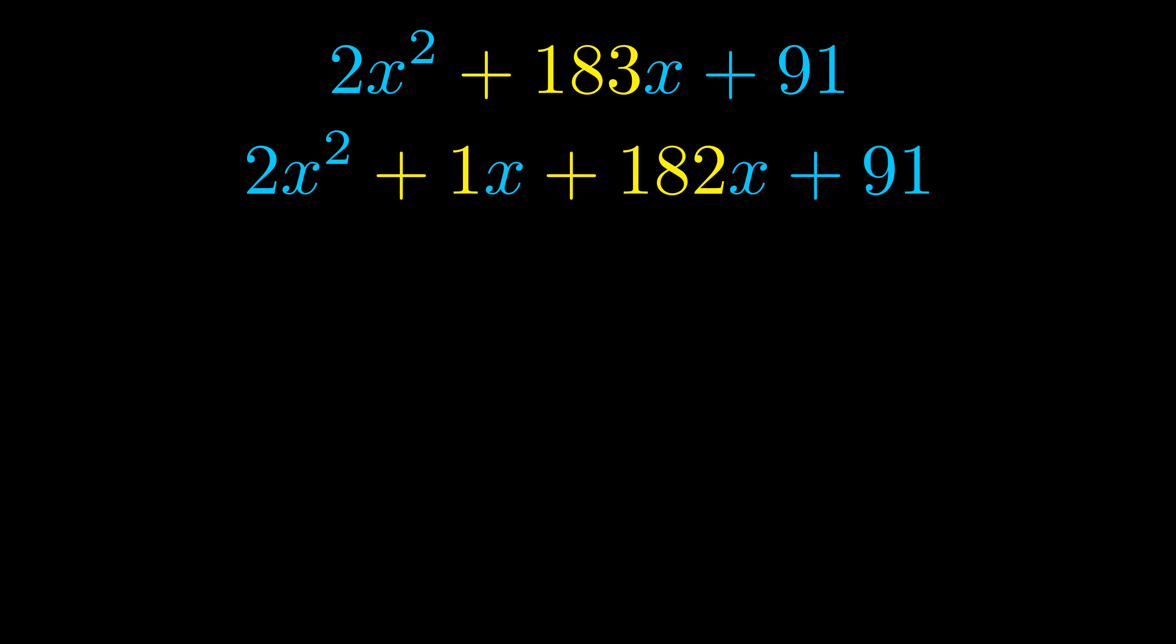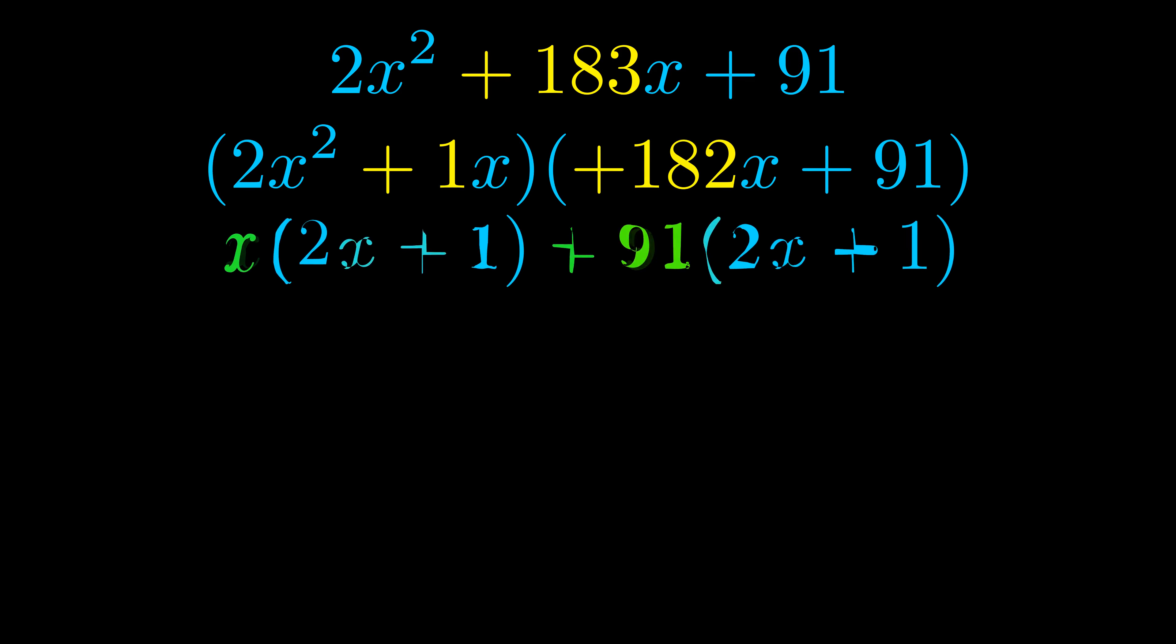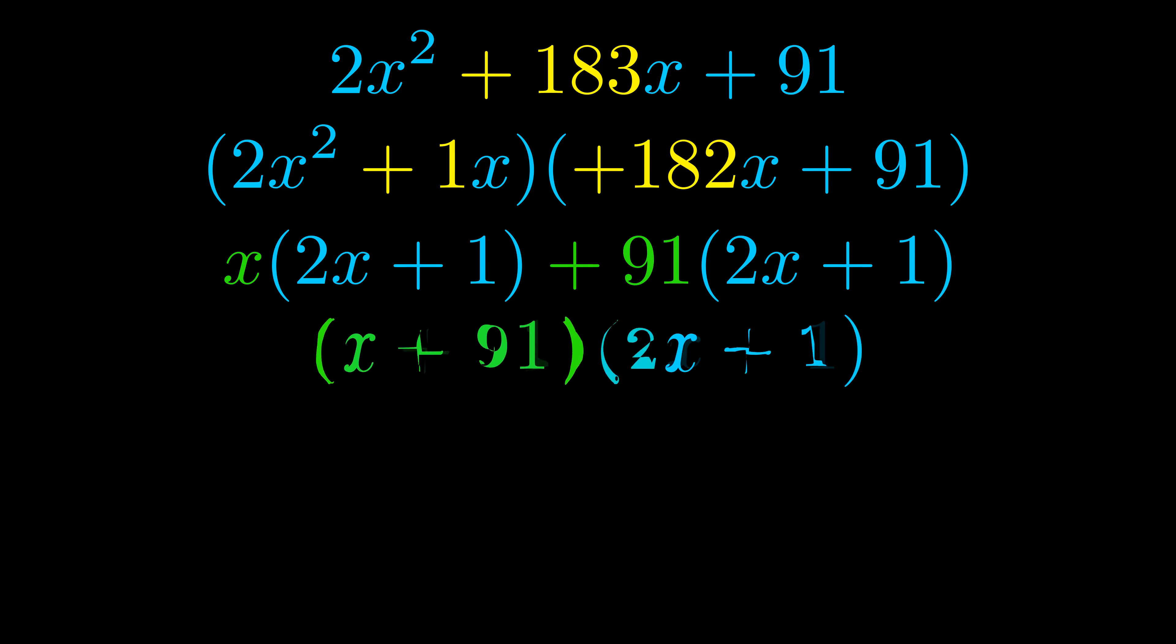Once we've done this we go ahead and put parentheses around the first term and the last term and we do that so that we can take the greatest common factor out of both terms. We can see the greatest common factor is now outside in green. Notice also how what remains inside of the parentheses is the same in both cases. The blue values are the same.